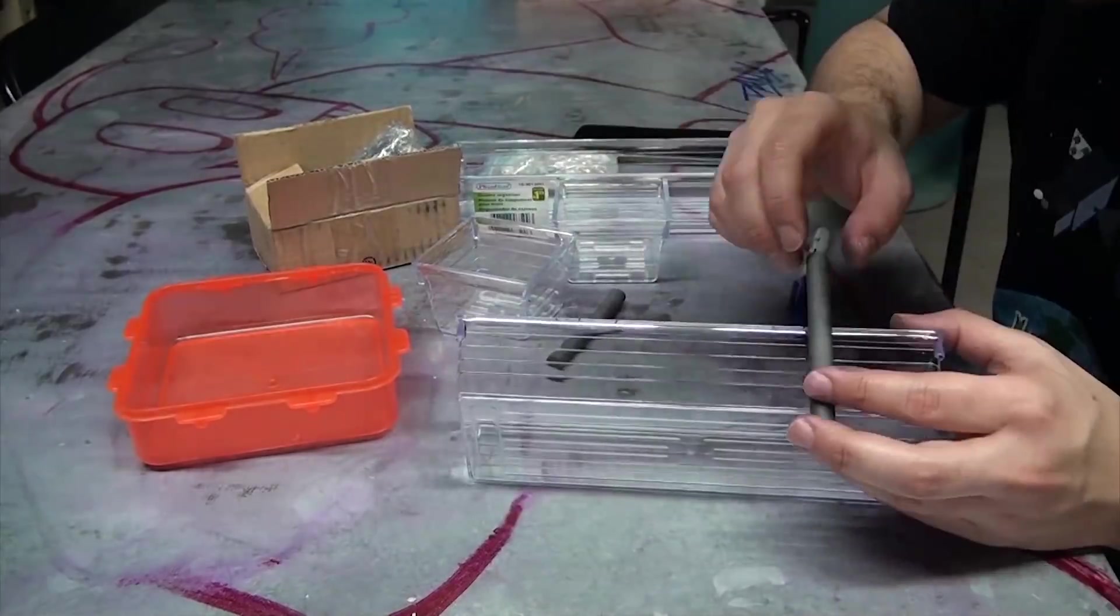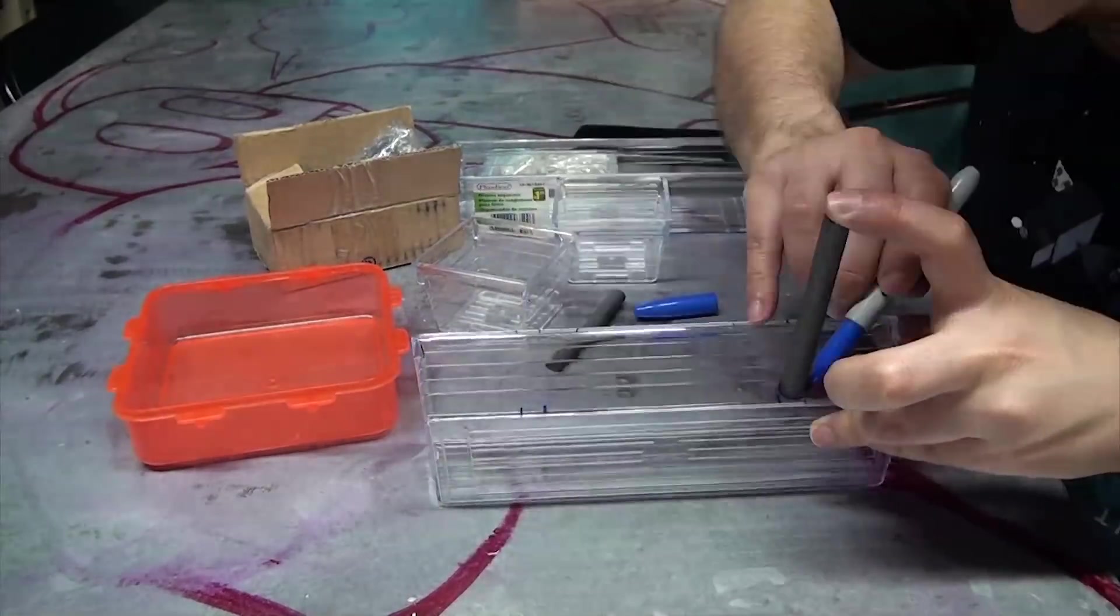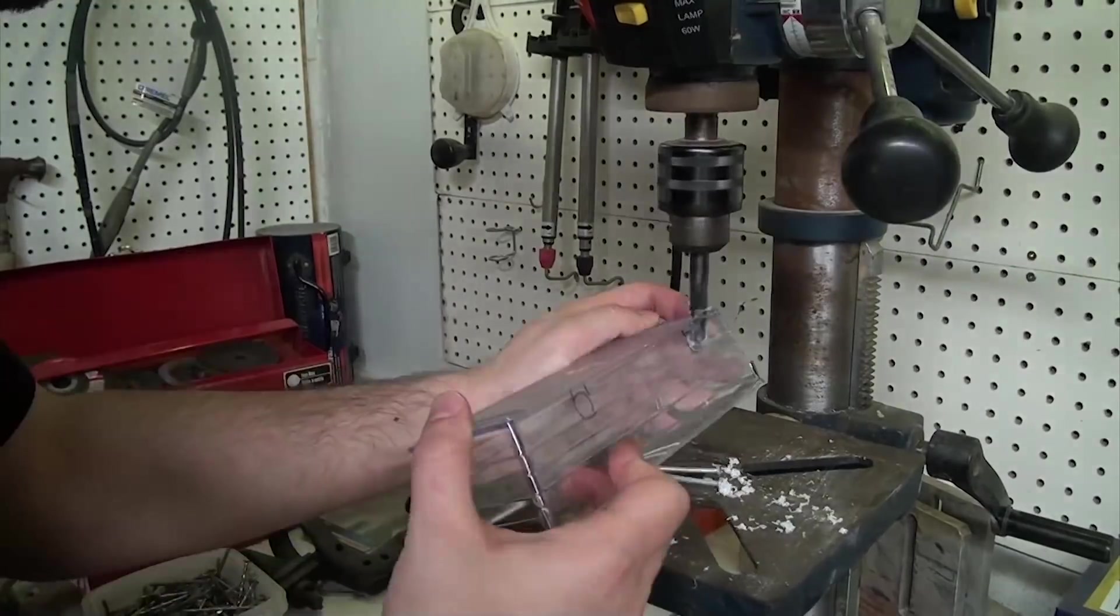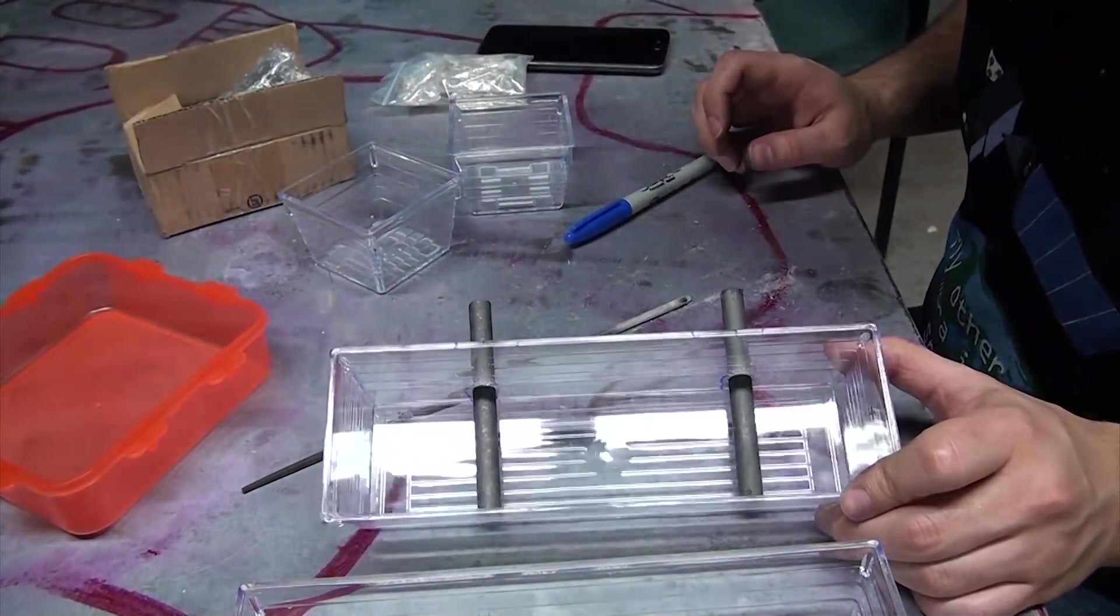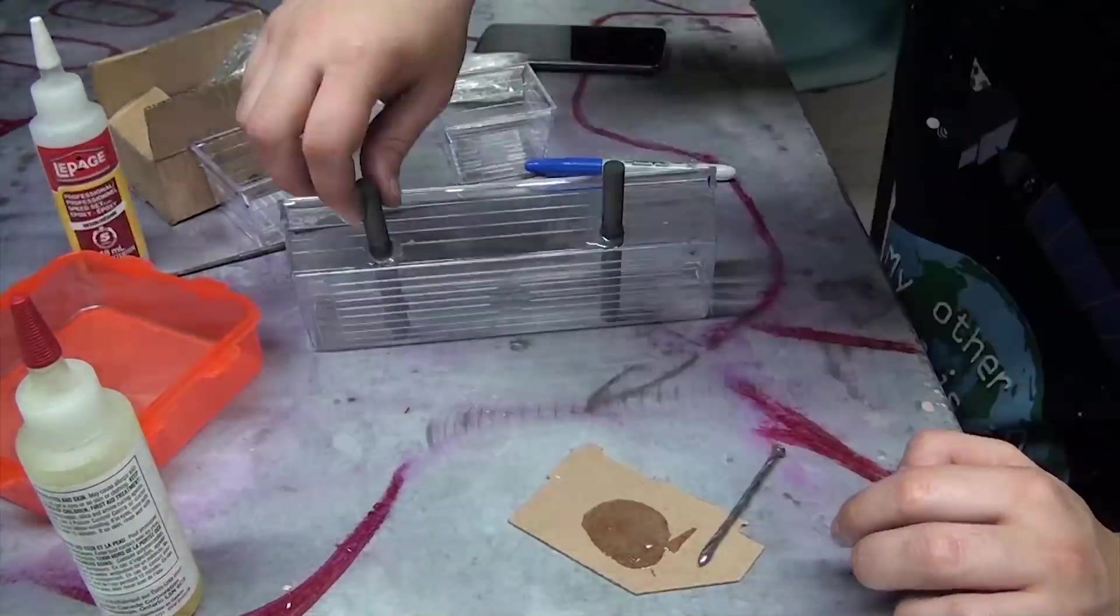To build the box, I first laid everything out to mark out how I wanted things to fit together. Then I drilled two holes in the side of the tray for the electrodes and used a file to clean up the holes and make the rods fit nicely. Then a bit of five-minute epoxy was used to hold them in place.